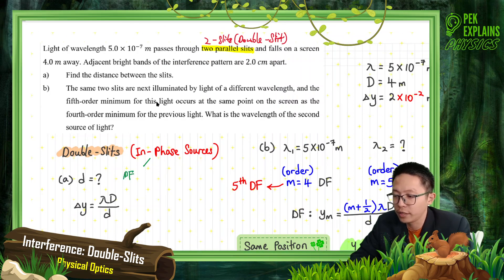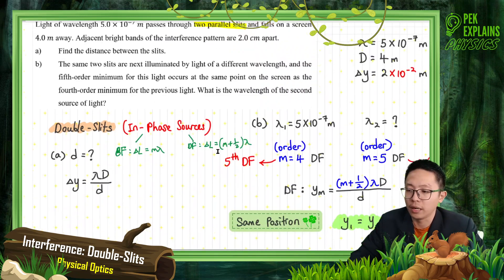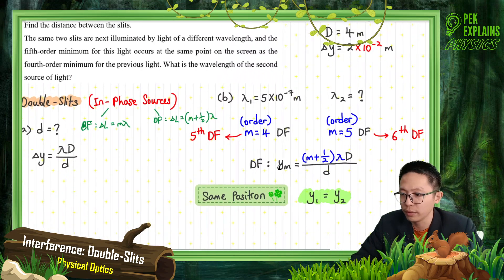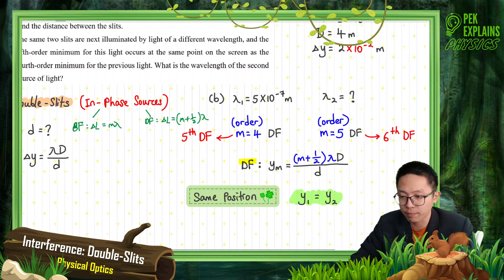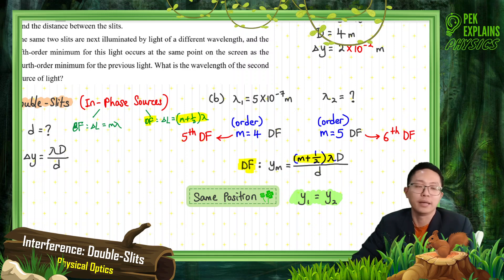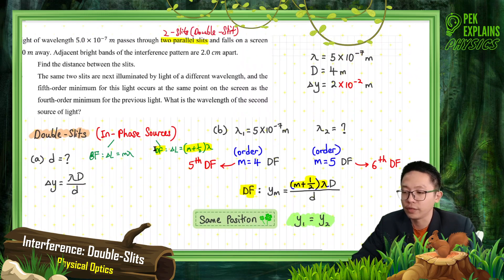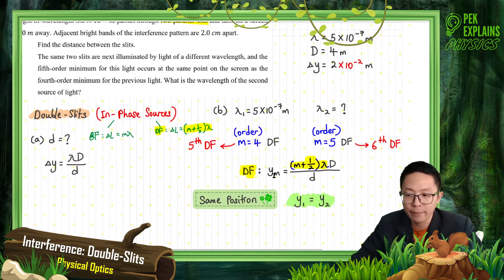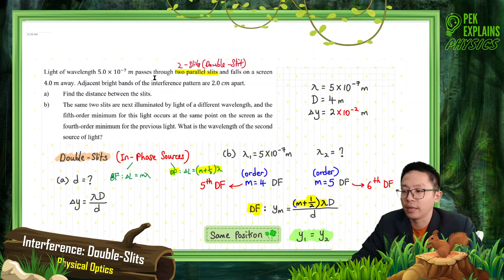Later on, if we want to use a formula for Y — specifically dark fringe — dark fringe uses (M + ½)λ. So the dark fringe YM is also (M + ½)λ. That's the way to do the question. For dark fringe, ΔL = (M + ½)λ, so YM for dark fringe = (M + ½)λD/d. And this is the wavelength given.